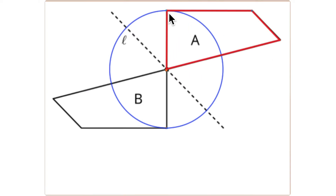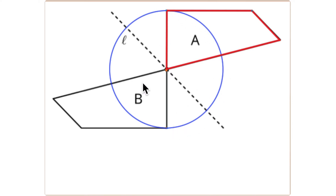B is going to rotate around, and if it lands at its corresponding point — which it does — then A is a rotation of B. A is actually a 180-degree rotation of B, because this point travels 180 degrees to its corresponding point. Every single point that makes up image B travels 180 degrees and lands on its corresponding point in A.